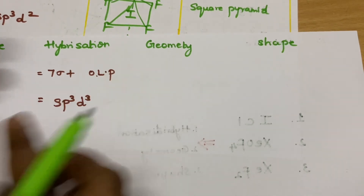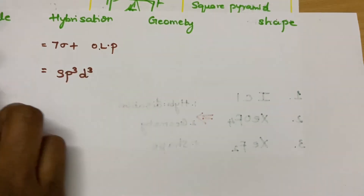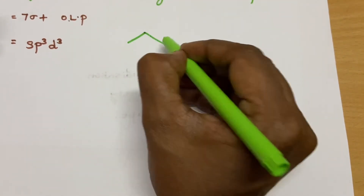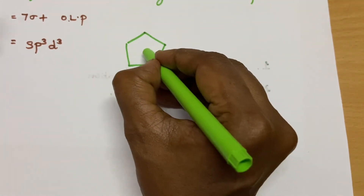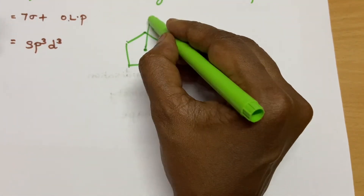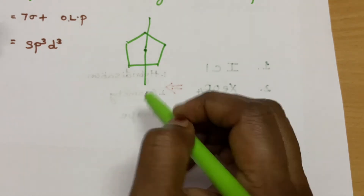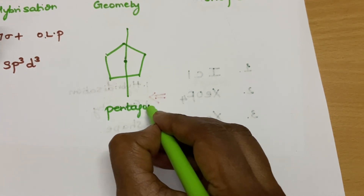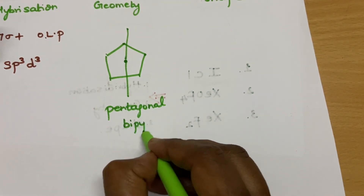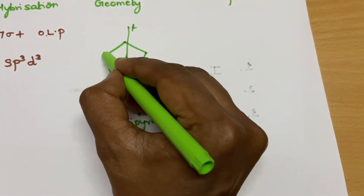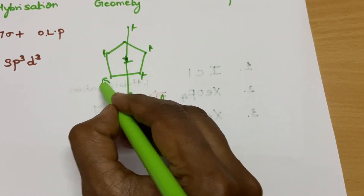IF₇ has seven sigma bonds and zero lone pairs. To keep seven atoms around the central atom, you draw a pentagon with five atoms in the equatorial plane, one atom above and one atom below. This is a pentagonal bipyramidal shape. The shape is also pentagonal bipyramidal.